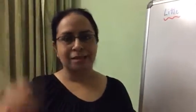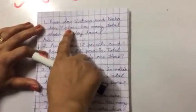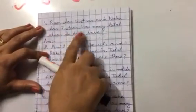Okay, so aaj hum start kar rahe hai. We are starting addition ki word problems. Bohut simple simple problems hai, so that your mind starts working. Okay, let us start. First question is, Ram has five stars, and Neha has seven stars. Thik hai?